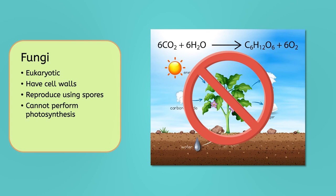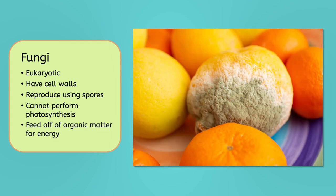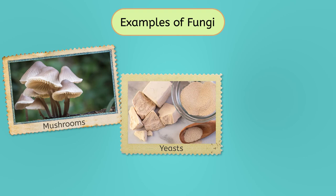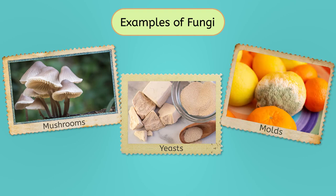No photosynthesis means they can't make their own food. Instead, they feed off organic matter to obtain energy. In this way, they share mixed traits of both plants and animals. Some examples include mushrooms, yeasts, and molds.